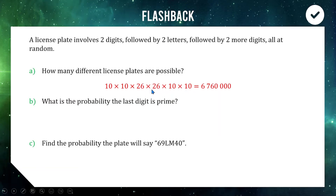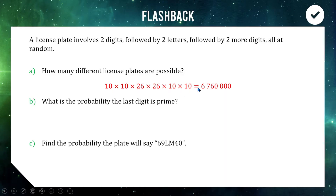Multiplying this all together we get about 6.76 million different possible license plates. For question B, the probability that the last digit is prime: we have ten options for that digit, and the primes less than ten are two, three, five, and seven — that's four options out of ten, which simplifies to two out of five.